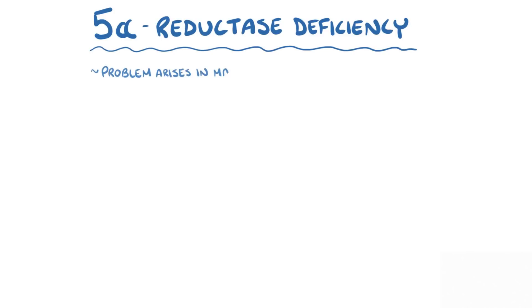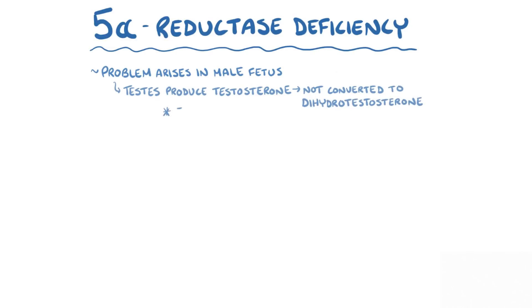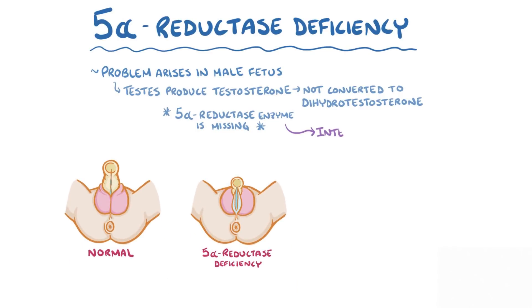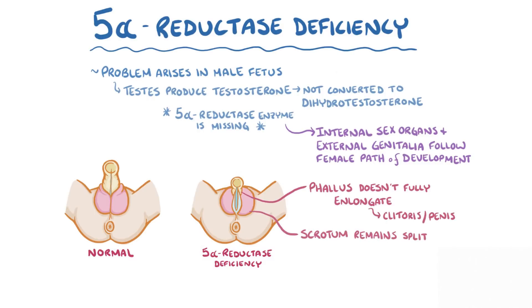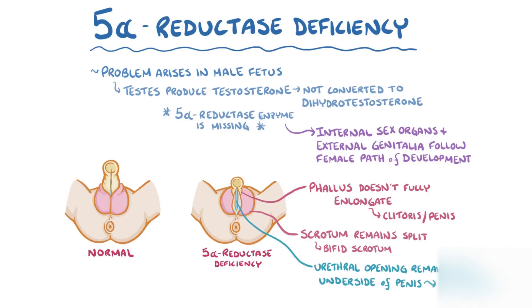The problem arises in a male fetus where the testes produce testosterone, but it isn't converted to dihydrotestosterone because the 5-alpha-reductase enzyme is missing. As a result, while there are male internal sex organs, the external genitalia follow more of a female path of development. Specifically, the phallus doesn't fully elongate, resembling something in between a clitoris and a penis, and the scrotum often remains split in two, which is also called a bifid scrotum, and the urethral opening remains on the underside of the penis, which is called hypospadias. The external genitalia doesn't look clearly male or female, and is sometimes called ambiguous genitalia.